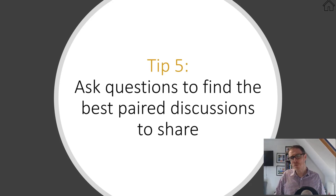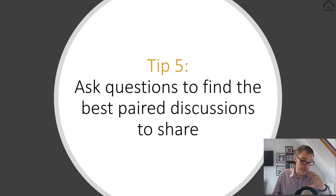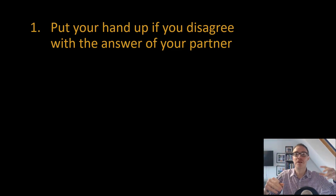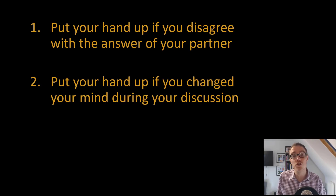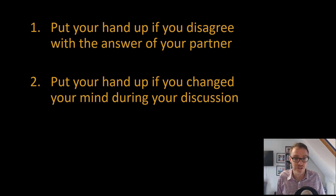And finally — I love this one. Paired discussions are often a rehearsal, either for individual work or for you then to choose a few pairs to share their thoughts. But how do you choose which pairs to ask? I've got three favourite questions. First: after the pair discussion, put your hand up if you disagree with the answer of your partner — you can be sure you're going to get two conflicting opinions, which is great to share with the rest of the class. Second: put your hand up if you changed your mind during your discussion — that gives you a great insight, because what convinced that student might just be the thing that convinces other students too.